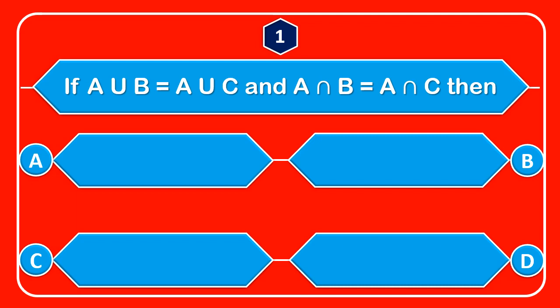Options: A — B is equal to C, B — A is equal to C, C — B is equal to C, D — None.